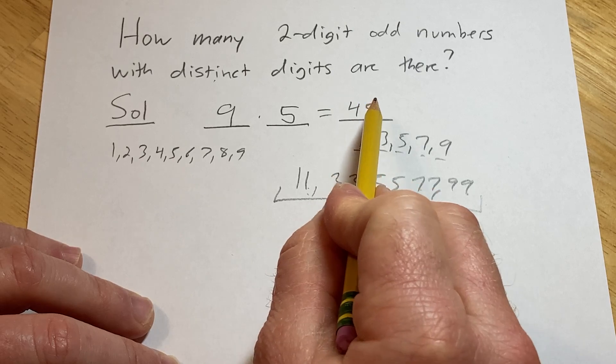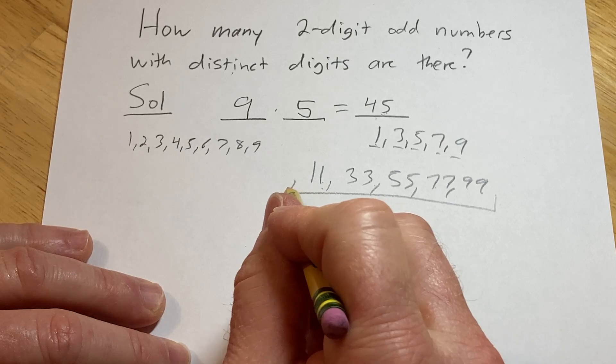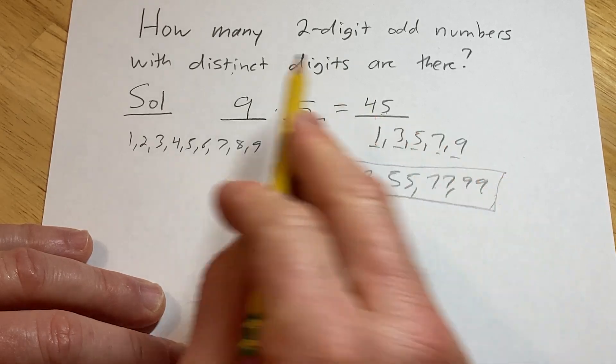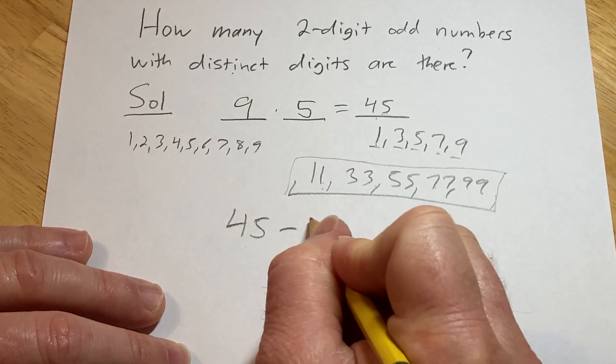So if you take all of the two-digit odd numbers, there's 45, and you take away the ones that don't have distinct digits. So there's five of those.